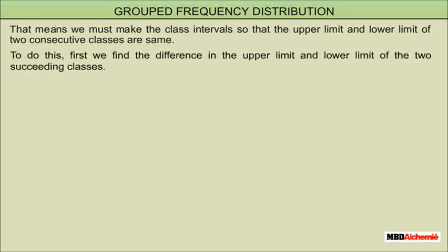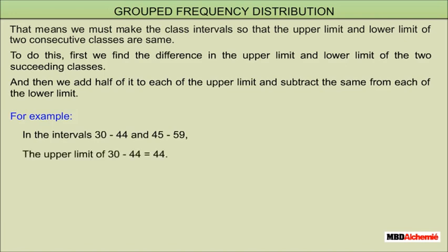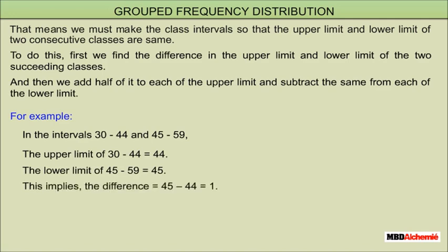To do this, first we find the difference between the upper limit and lower limit of two succeeding classes, then we add half of it to each upper limit and subtract the same from each lower limit. For example, in the intervals 30 to 44 and 45 to 59, the upper limit of 30–44 is 44 and the lower limit of 45–59 is 45, so the difference is 1 and the half of the difference is 0.5.